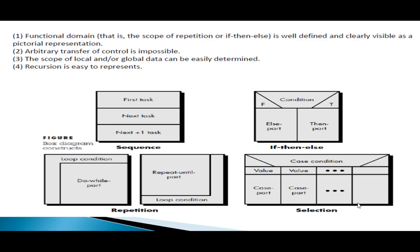Next is the selection part - for example, the switch case. The switch case uses a variable, and we determine the values. For each case label, we check the statement. If the value matches a case, the statement of that case executes. If no case matches, the default case executes. Each case part contains a break statement. When the break statement is reached, program execution exits the switch, so each case is executed efficiently. This represents the four types of constructs using box diagrams, which is another easy way of representing a program other than a flowchart.